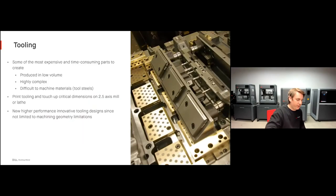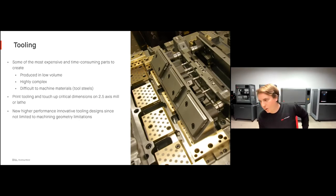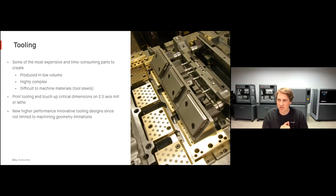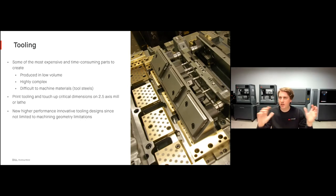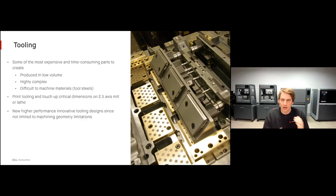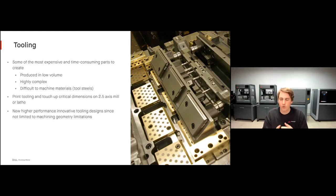Another great example of using metal 3D printing as a complement to machining is tooling. Tooling is generally some of the most expensive and time-consuming parts to create — produced in very low volume, often highly complex, sometimes requiring difficult-to-machine tooling steels. One great application for metal 3D printing, especially on the Studio System, is to simply print your tooling. If needed, you can touch up dimensions on a 2.5-axis mill or lathe, rather than machining an entire block of steel and wasting all that material. You can also create innovative new tooling designs not limited by machining's geometry constraints.